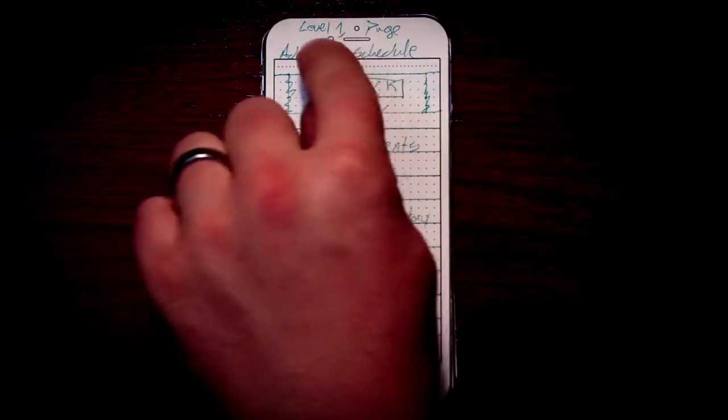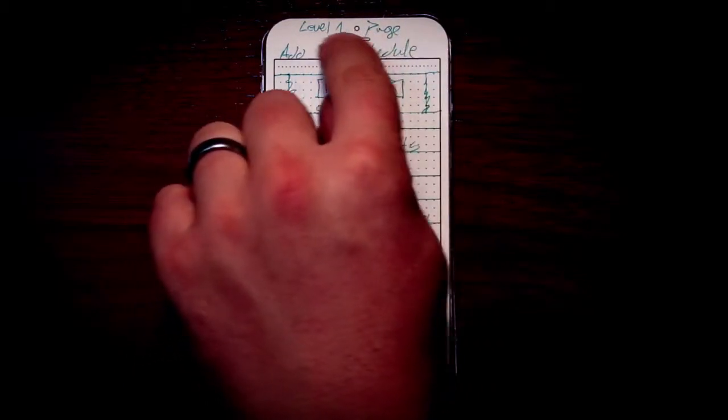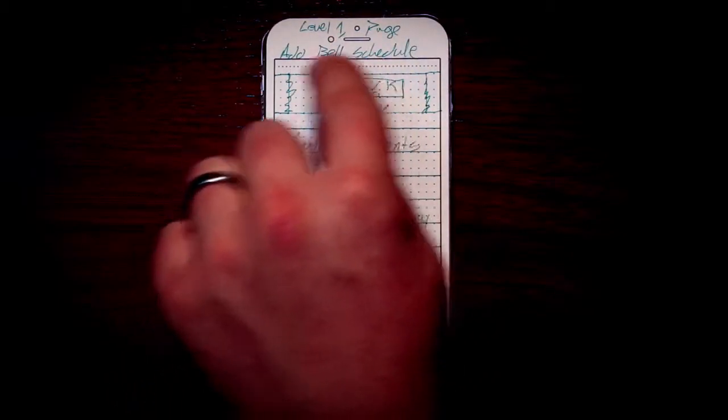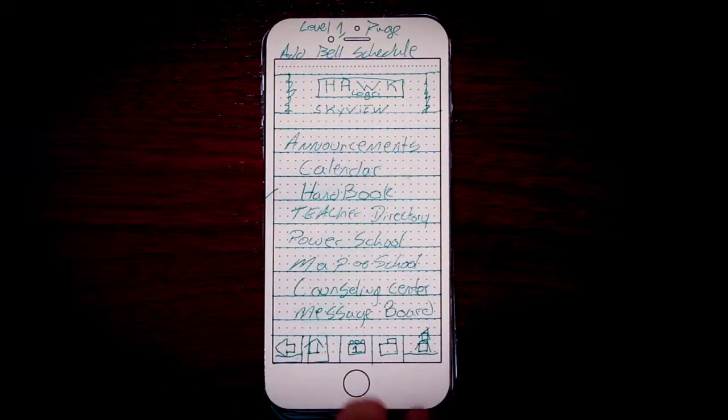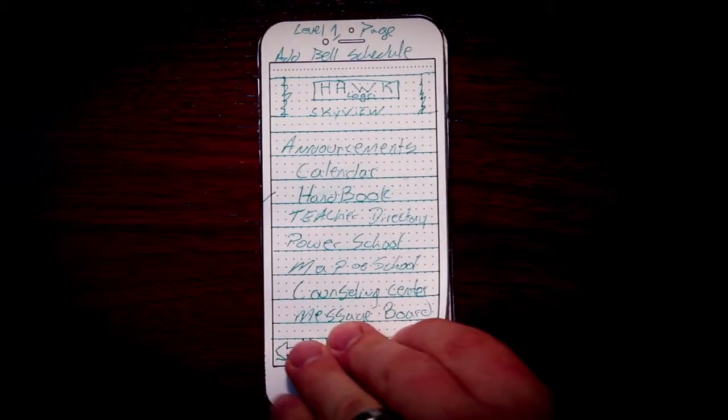And I noted on these, this is a top-level page. This is level one. And I noted also I need to add the bell schedule as one of these options. So I'll look at another page of the app here.